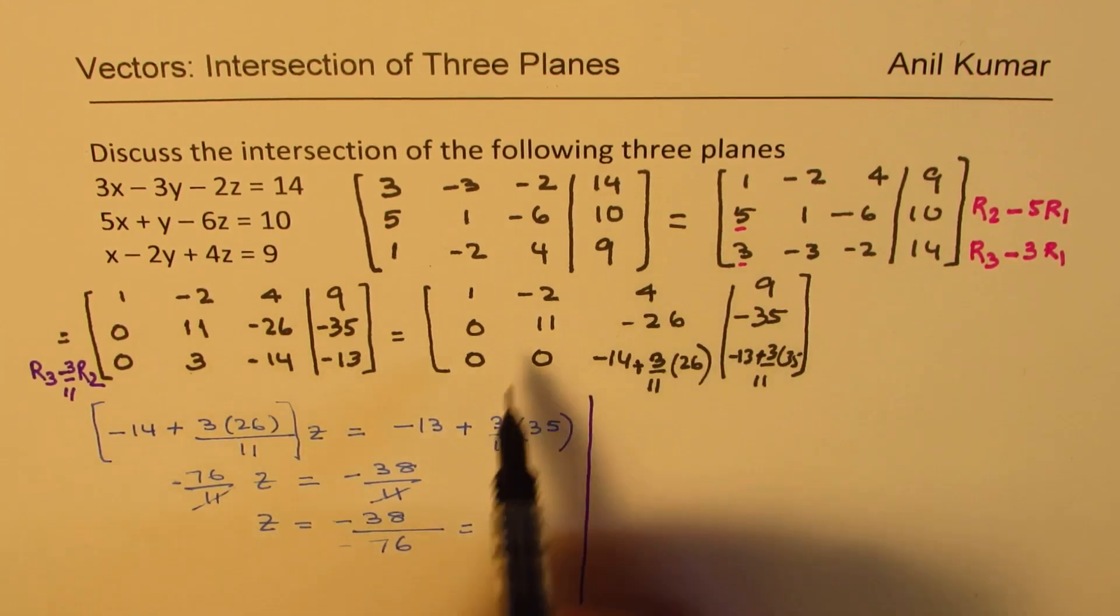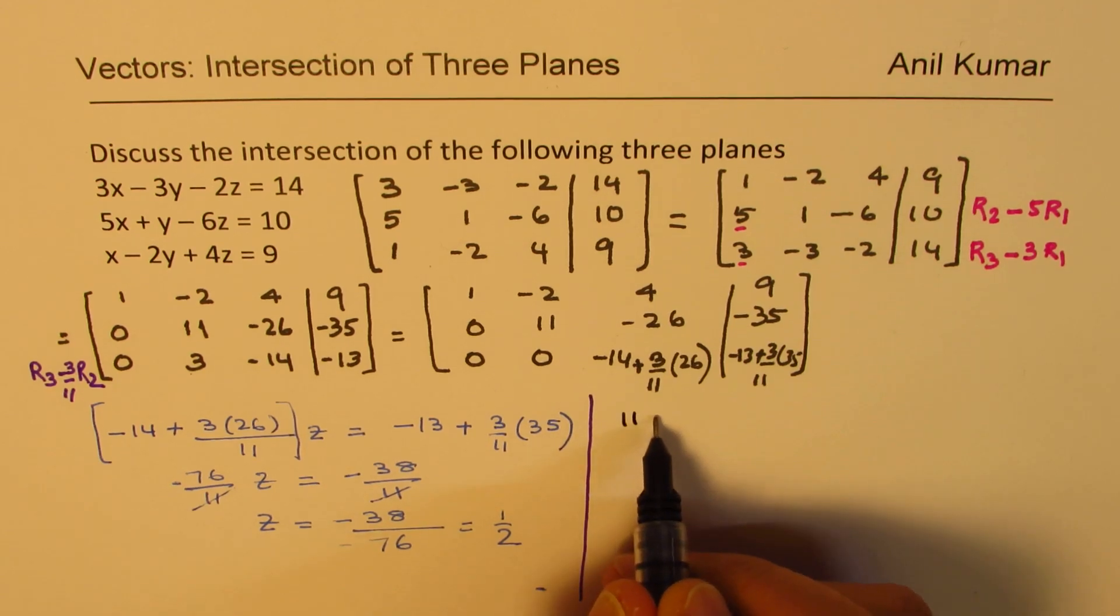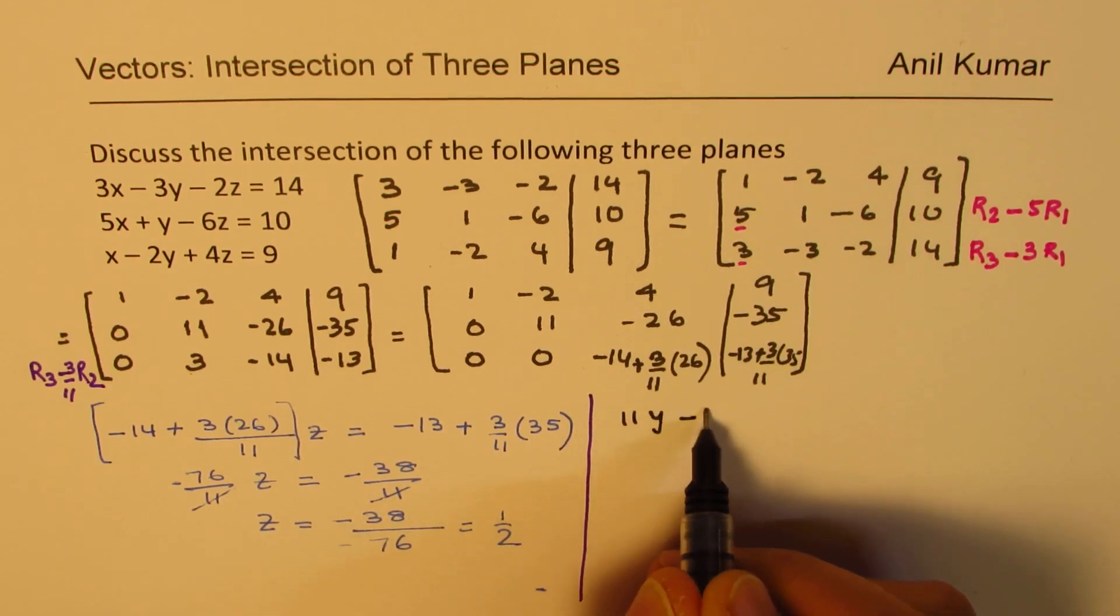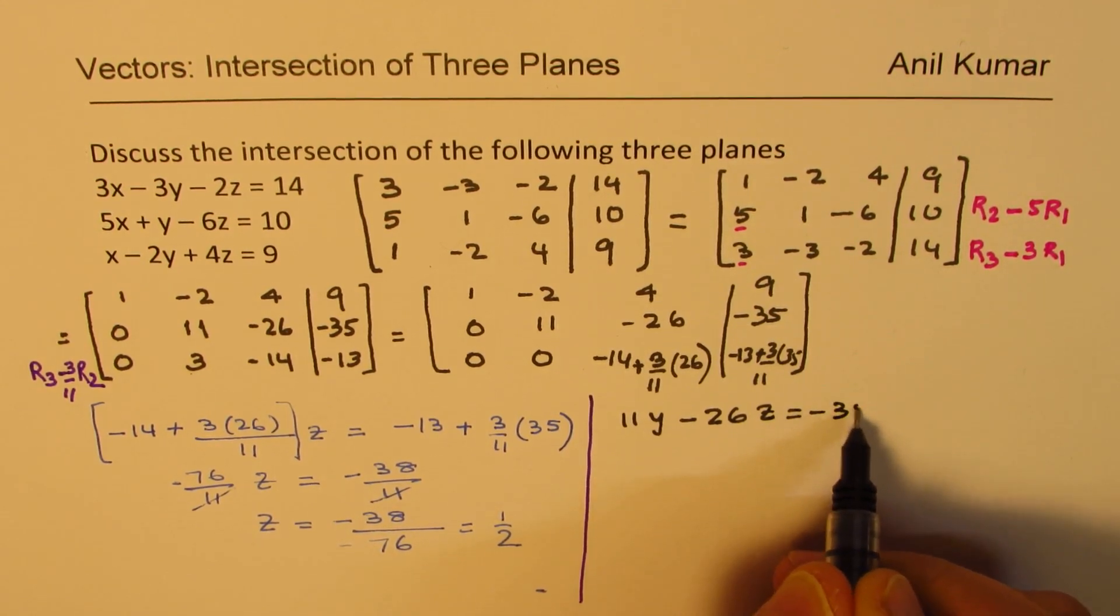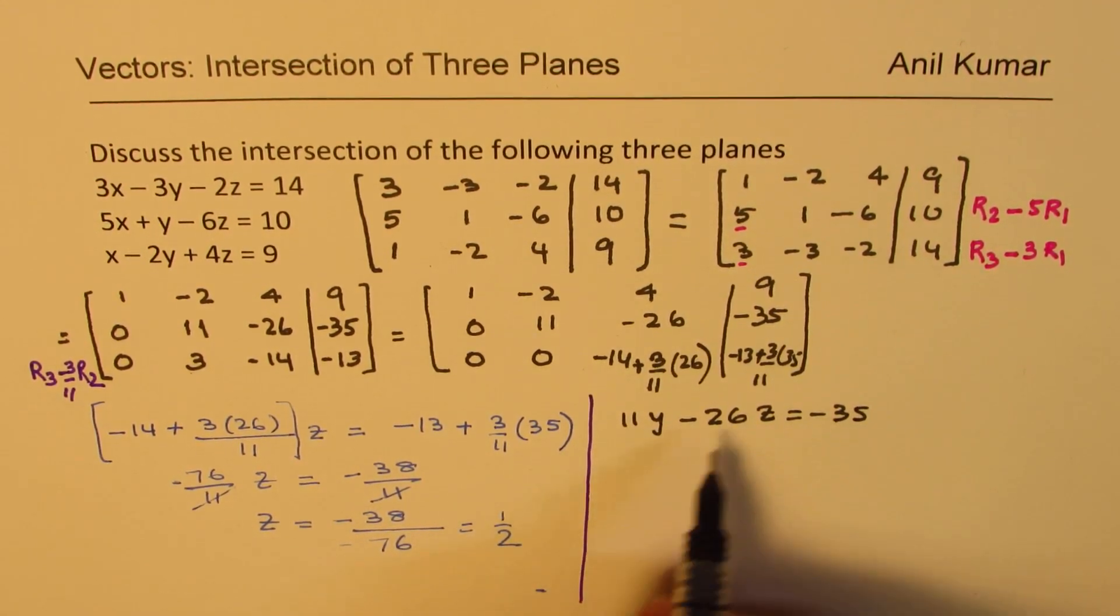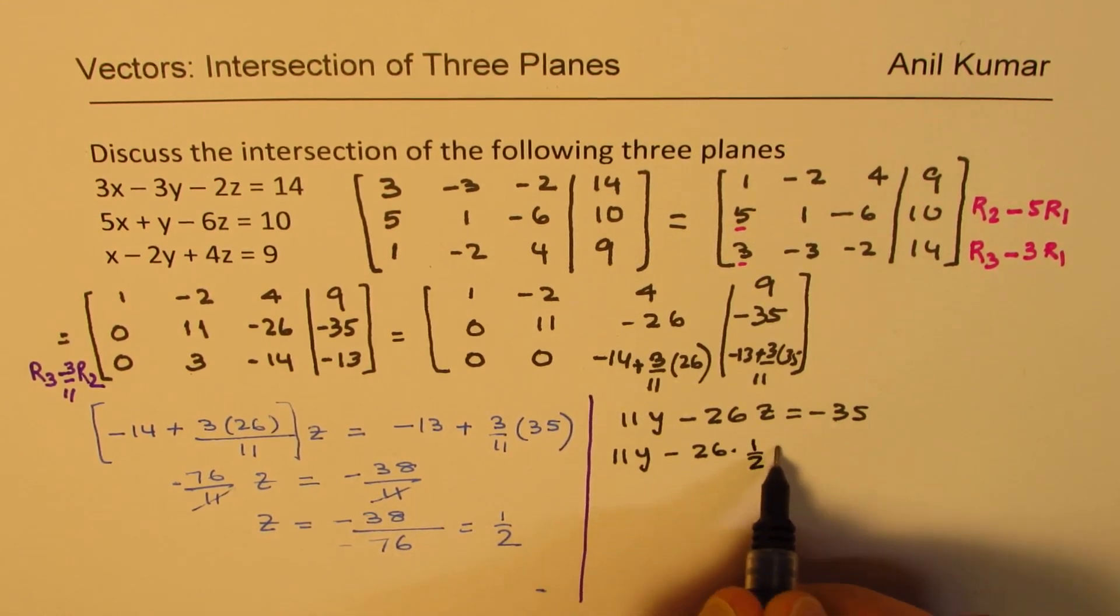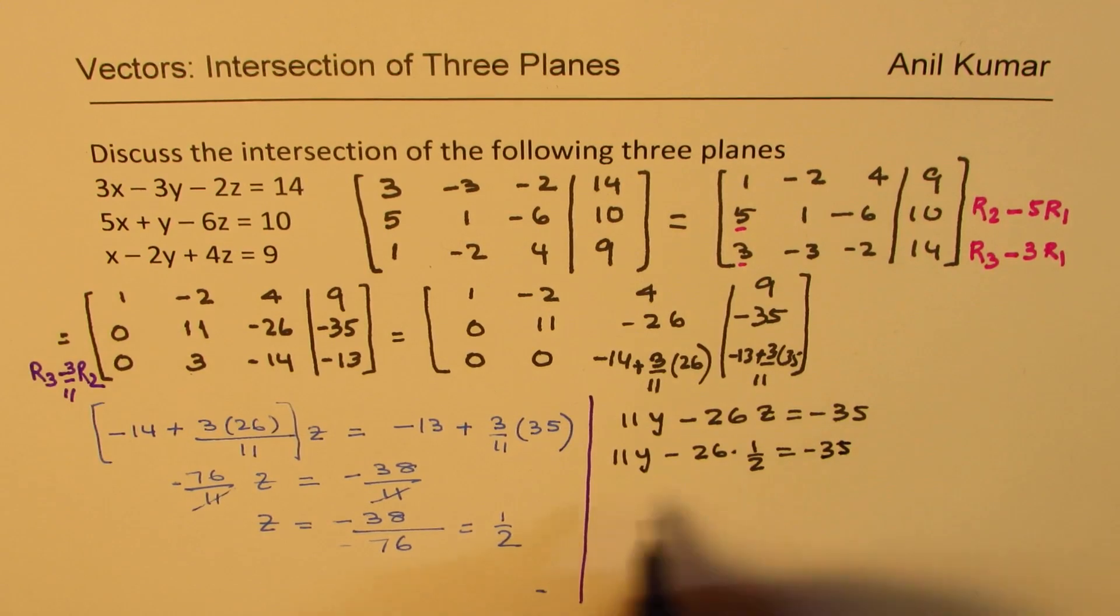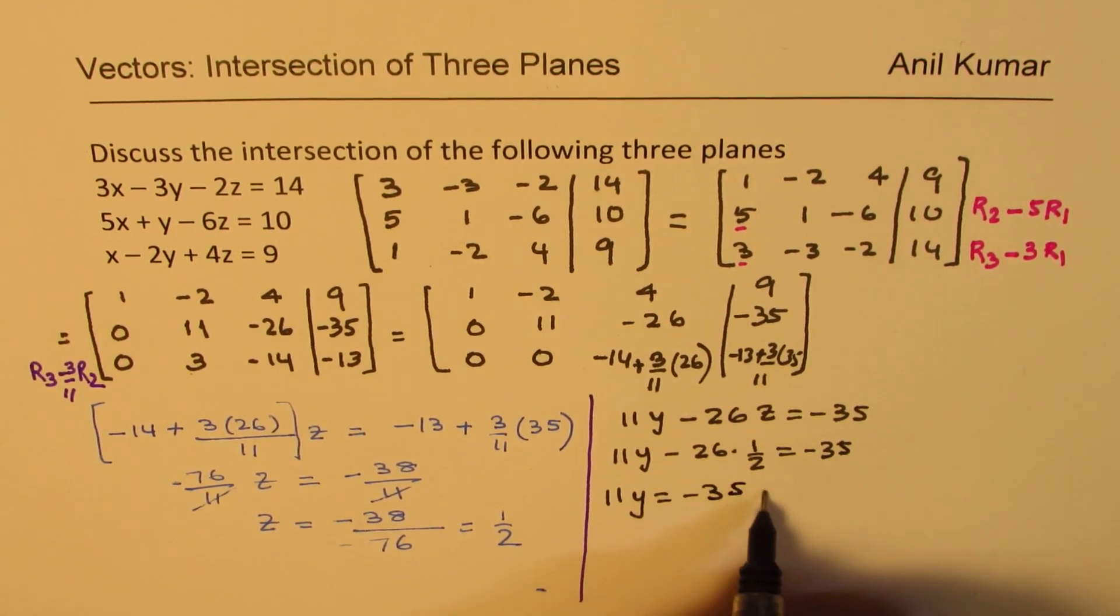Now we can substitute this value of z and get the value of y and then x. So we have this equation, the second one here. Second row gives us 11y minus 26z equals to minus 35. Substituting half for z, we get 11y minus 26 times half equals to minus 35.